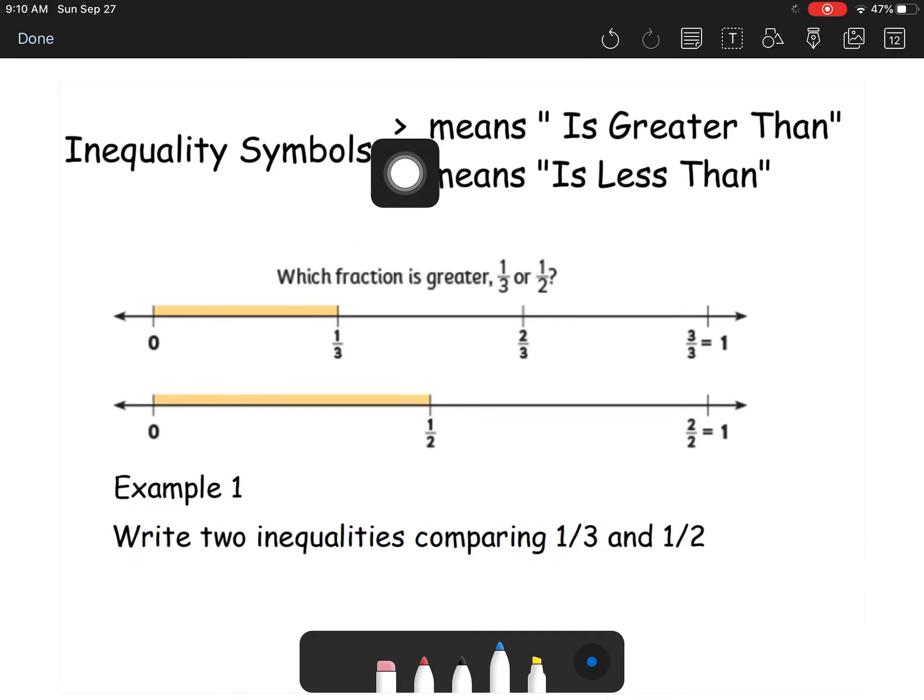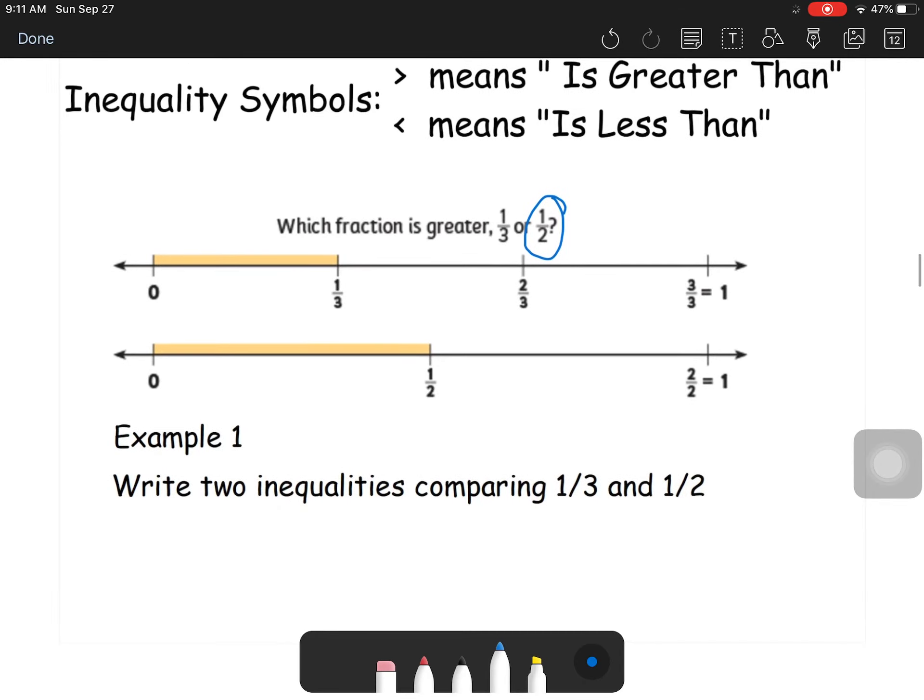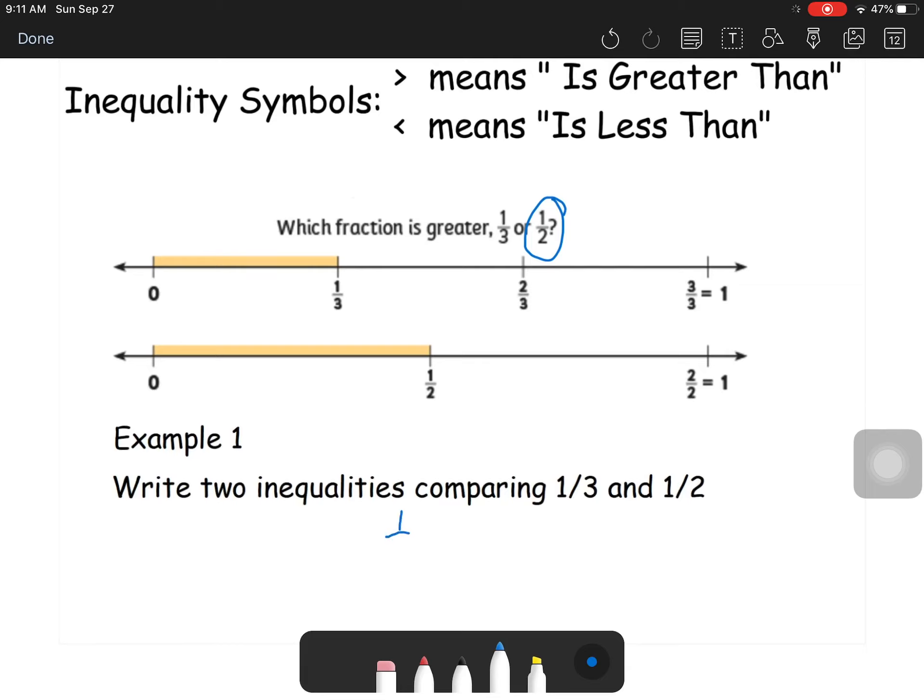Okay, so inequality symbols. When it points to the right, this means is greater than. When it points to the left, is less than. So which fraction is greater, 1/3 or 1/2? If we draw them out on a number line, this is why we've been working on these fair shares. So if we have 0 here and 1 here, we have the same thing, 0 and 1. Well, if we break it into thirds, right, and this is 1/3, and if we break this one into halves, and this is 1/2, clearly, 1/2 is bigger than 1/3. So we know that 1/2 would be bigger than 1/3. So it says write an inequality that compares the two. There's two different ways we could do this. We could say 1/2 is greater than 1/3, or we could say that 1/3 is less than 1/2. Those are the two ways that we can write an inequality.